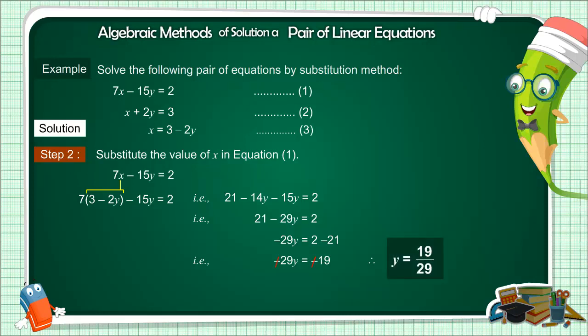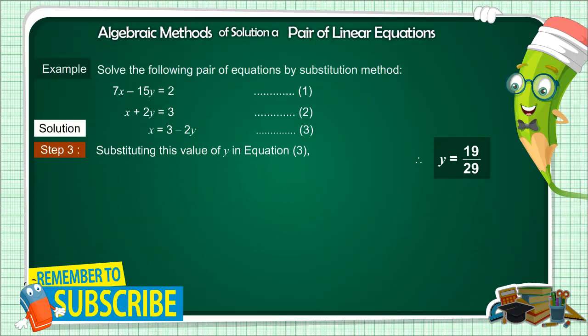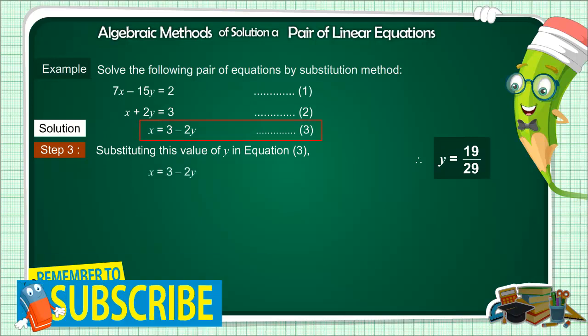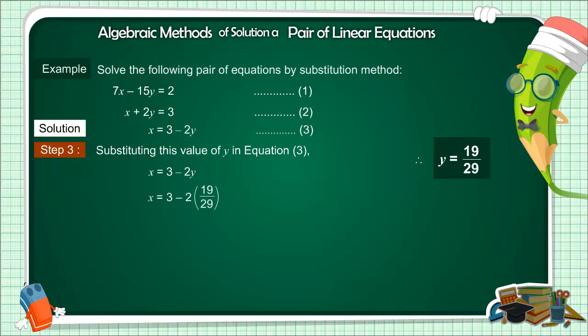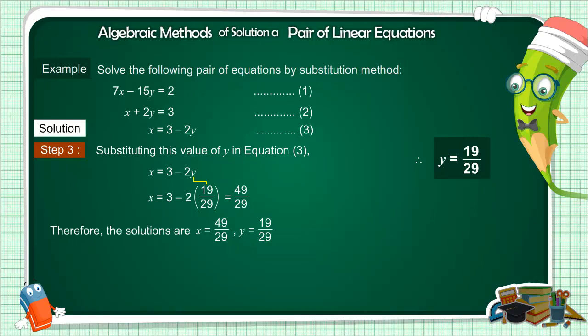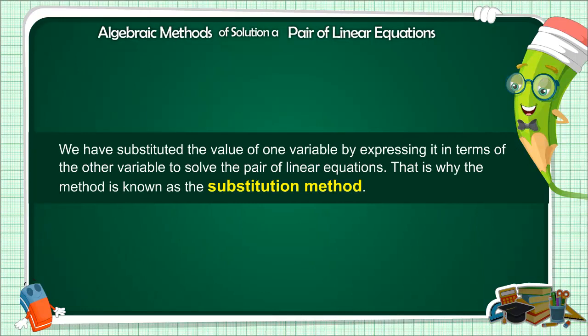The value of y has arrived. Now with the help of this we will extract the value of x as well. We put the value of y in equation 3: x equals 3 minus 2y. Putting the value: x equals 3 minus 2 into 19 by 29. After solving, the value of x is 49 by 29. Thus the solutions are x equals 49 by 29 and y equals 19 by 29. You can verify by substituting these values back into both equations. This method — extracting one variable and substituting to find the other — is called the substitution method.